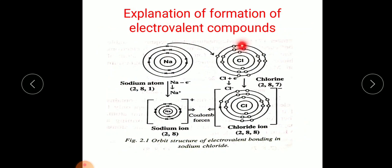Now let's explain the formation of an electrovalent bond using the example of sodium chloride. Sodium has atomic number 11, so its electronic configuration is 2, 8, 1 — two electrons in the first shell, eight in the second, and one in the last. Chlorine has the electronic configuration 2, 8, 7. Both atoms need to be stable, and according to the octet rule, each must have eight electrons in the outermost shell.